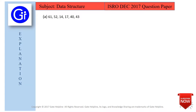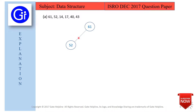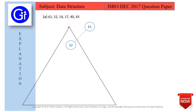We will now take all options one by one and check whether the sequences are possible or not. For option A, the sequence is 61, 52, 14, 17, 40, 43. We will try to make a binary search tree with these inputs. Starting with 61 as the root — values less than 61 go on the left side and values greater than 61 go on the right side. The next value is 52, and since 52 is smaller than 61, it will be on the left subtree.